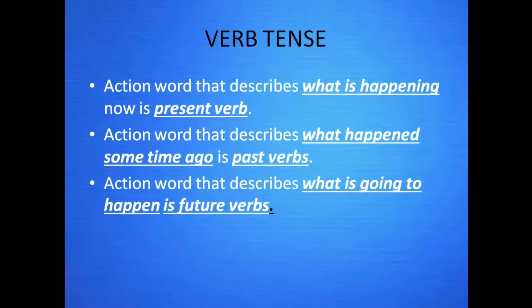Verb tense. An action verb that describes what is happening now is a present verb. An action verb that describes what happened sometime ago is a past verb. And an action verb that describes what is going to happen in the future or in a few minutes is a future verb.